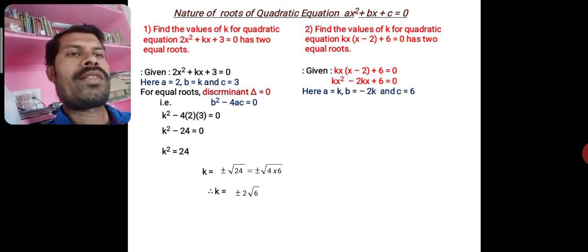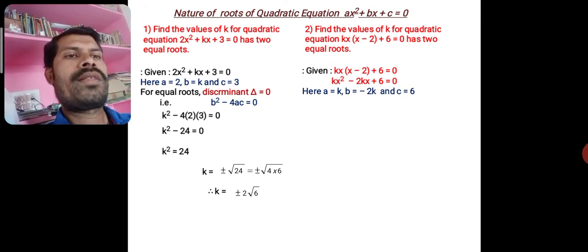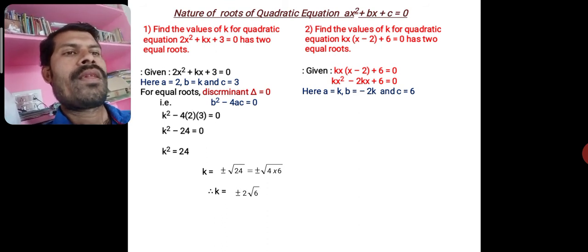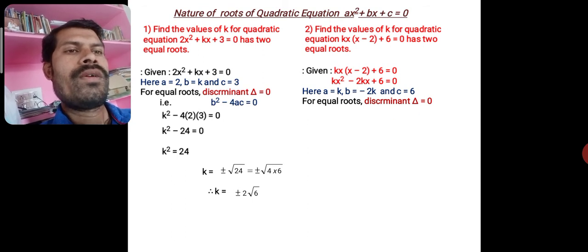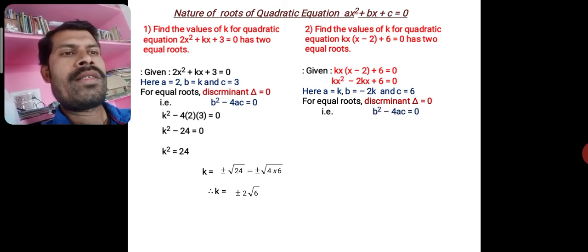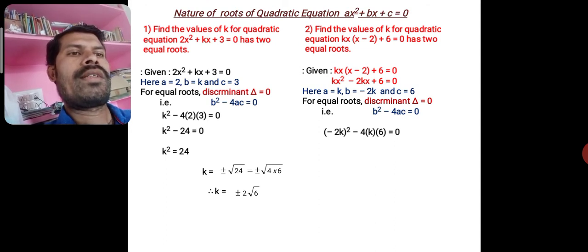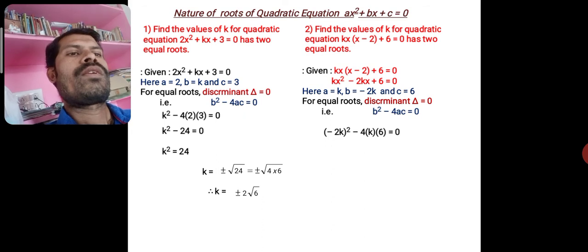Now a = k, b = −2k, c = 6. For equal roots, the discriminant should be 0: b² − 4ac = 0. So (−2k)² − 4 × k × 6 = 0.